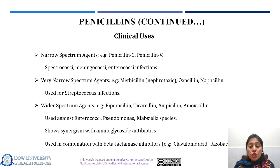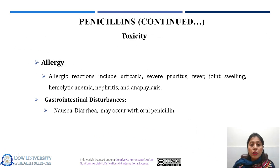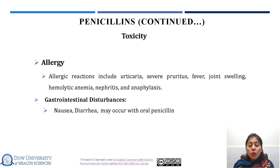These agents basically show synergism with aminoglycoside antibiotics — they support each other's effects, resulting in enhanced effects. To overcome the problem of resistance against beta-lactamases, these antibiotics have been used in combination with beta-lactamase inhibitors including clavulanic acid and tazobactam. Regarding toxicity of penicillins, they cause allergic reactions including urticaria, severe pruritus, fever, hemolytic anemia, and anaphylaxis. Some gastrointestinal disturbances have also been observed, including nausea and diarrhea, which may occur with oral penicillins.